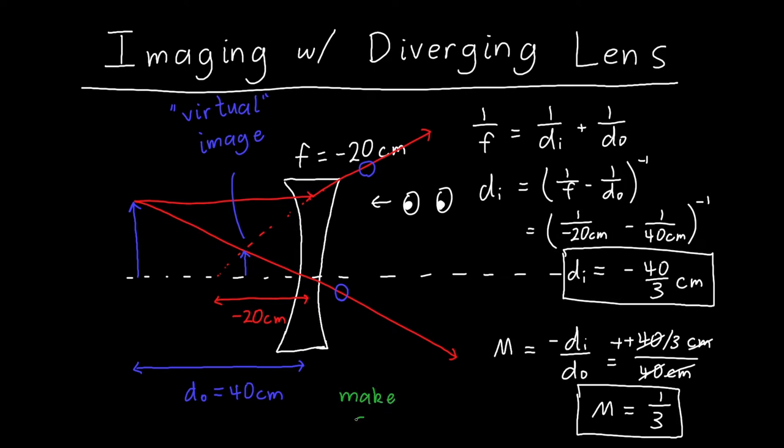Does this ray tracing make sense? Is this consistent with what we found in our previous equation? We see that our image appears to be located a little less than 20 centimeters - maybe like 14 or 13 or something. That's about what we expected - we expected it to be at minus 13.3 roughly.